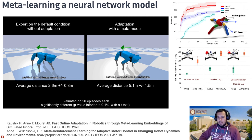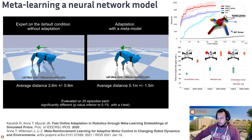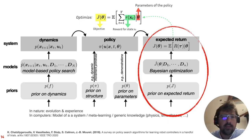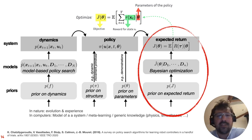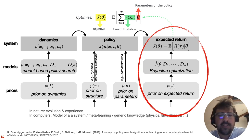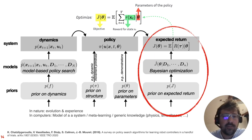Now let's move to models of the expected return, and what we can do with Bayesian optimization and priors on Bayesian optimization.